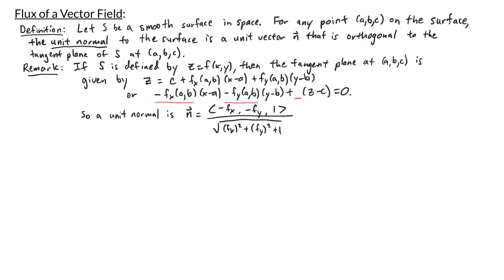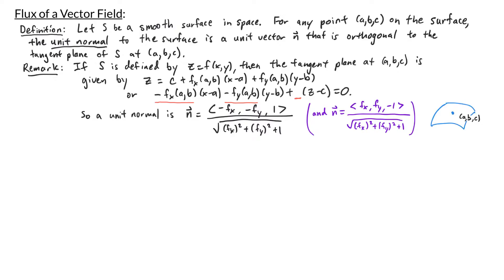Note that for a surface there are two unit normals at any given point ABC. One is the vector we've just written and the other is the negative of that. To visualize this, consider a surface with the point ABC — one of the unit normals points up and the other points in the opposite direction. Both are orthogonal to the tangent plane and both are unit vectors.